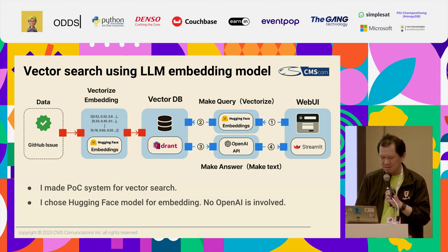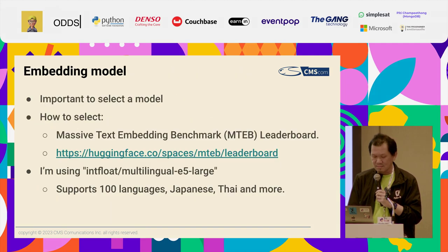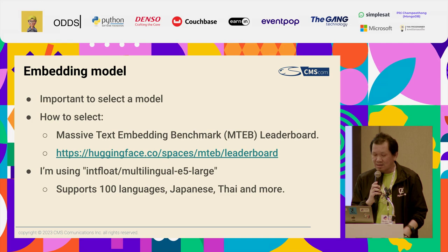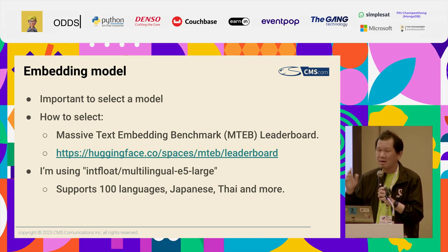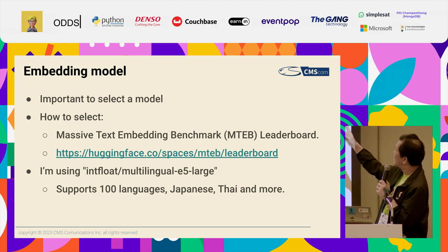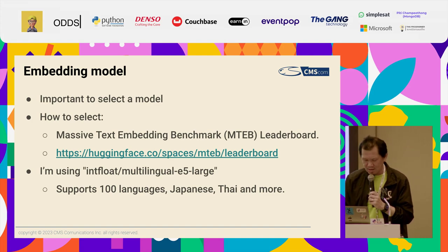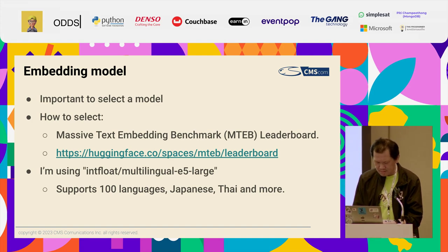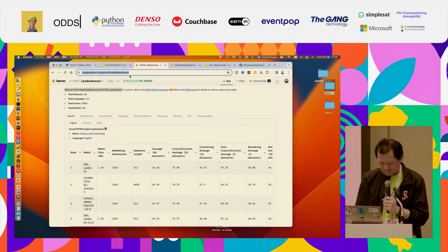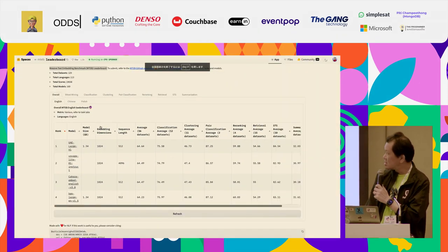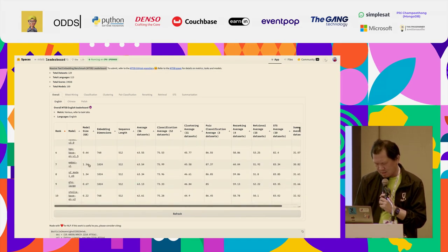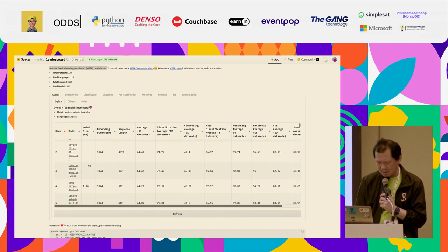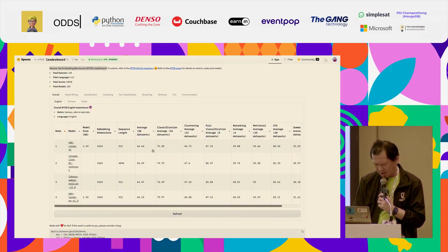I chose a Hugging Face model for embedding, not OpenAI. It's important to select the right model. For how to select, I recommend the MTEB leaderboard at this URL. This is the leaderboard showing some embedding models ranked there.